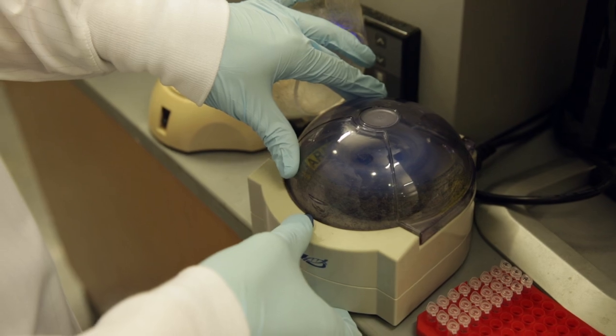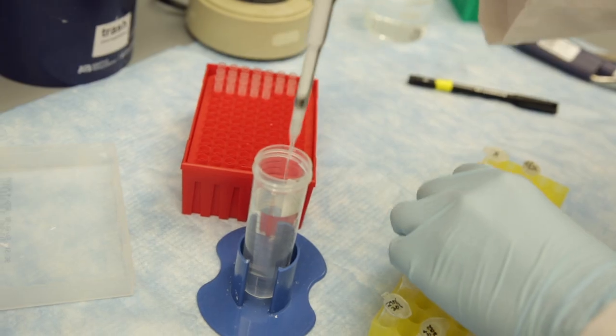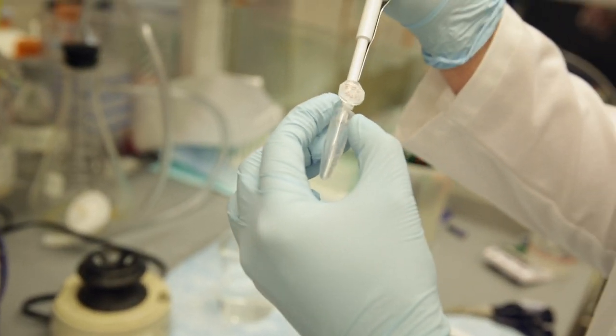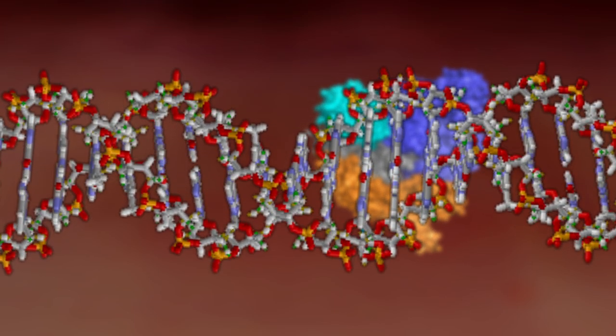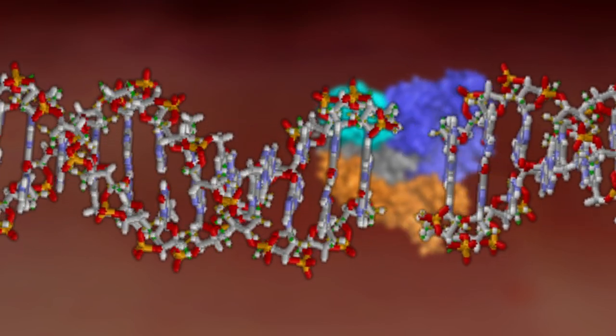It's going to enable a lot of science to be done that was impossible to do in the past. The way the CRISPR technology works is by the action of a protein called Cas9 that functions like a molecular scalpel for DNA.